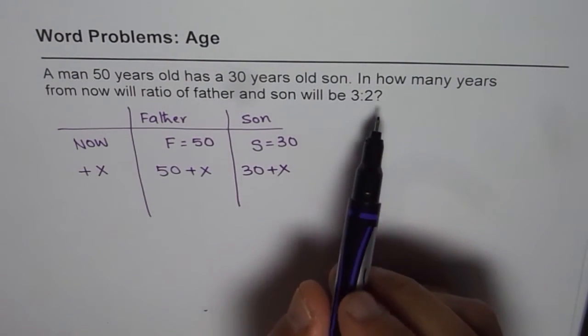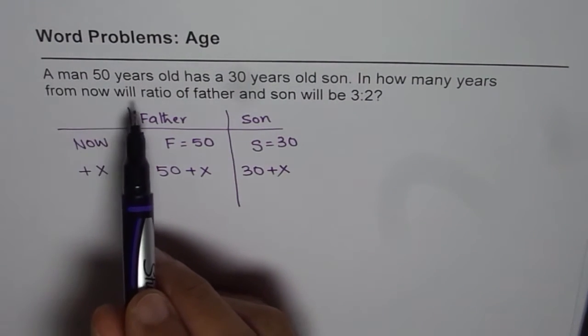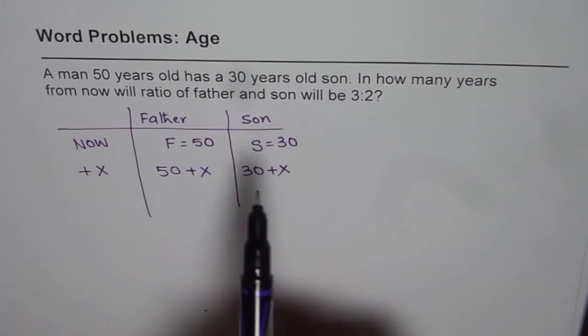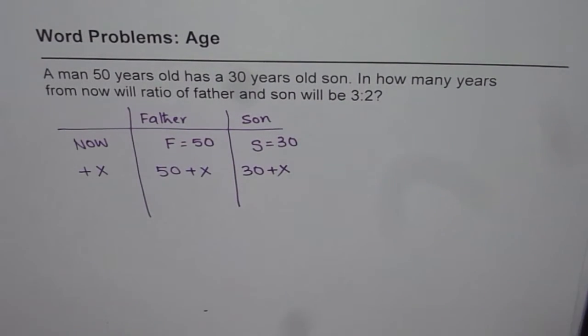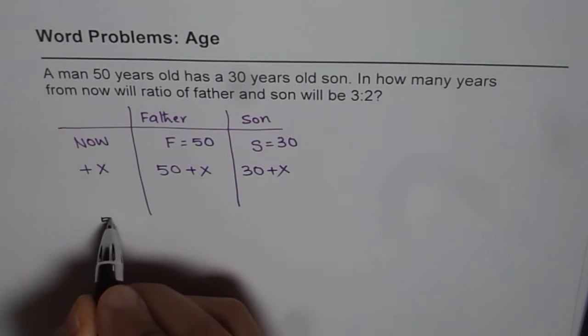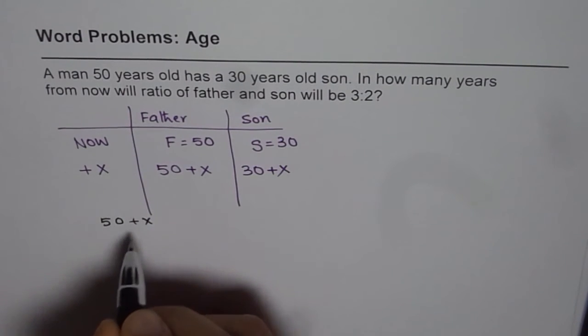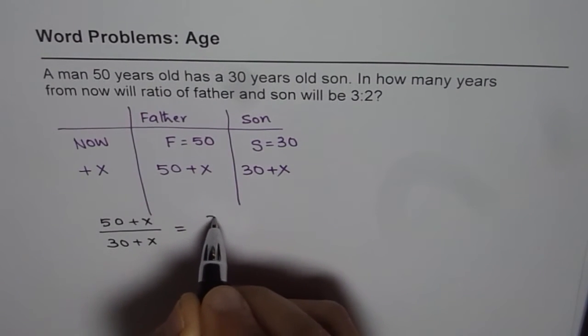The question asks when the ratio will be 3 to 2. Ratio means when you divide these two ages you should get 3 over 2. This gives us the equation: (50 + x) / (30 + x) = 3/2.